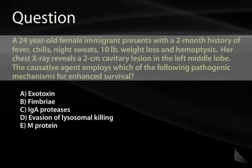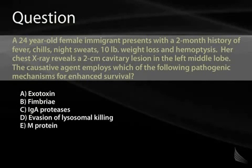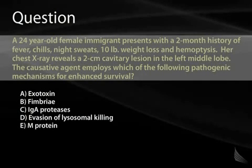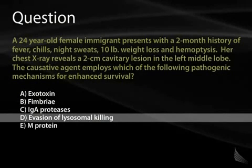Practice question: A 24-year-old female immigrant presents with two months of fever, chills, night sweats, 10-pound weight loss, and hemoptysis. Chest X-ray reveals a 2-centimeter cavitary lesion in the left middle lobe. The causative agent employs which pathogenic mechanism for enhanced survival? From the clinical picture — immigrant, fever, night sweats, weight loss, cavitary lesion — we know this is tuberculosis, i.e., Mycobacteria. The mechanism mycobacteria use to evade the immune system is evasion of lysosomal killing.